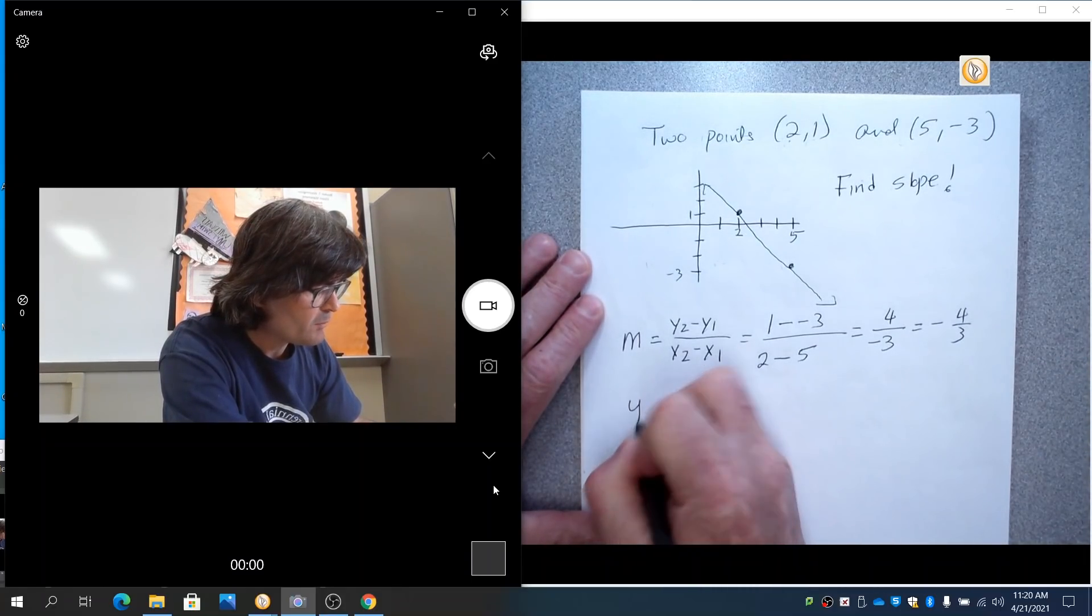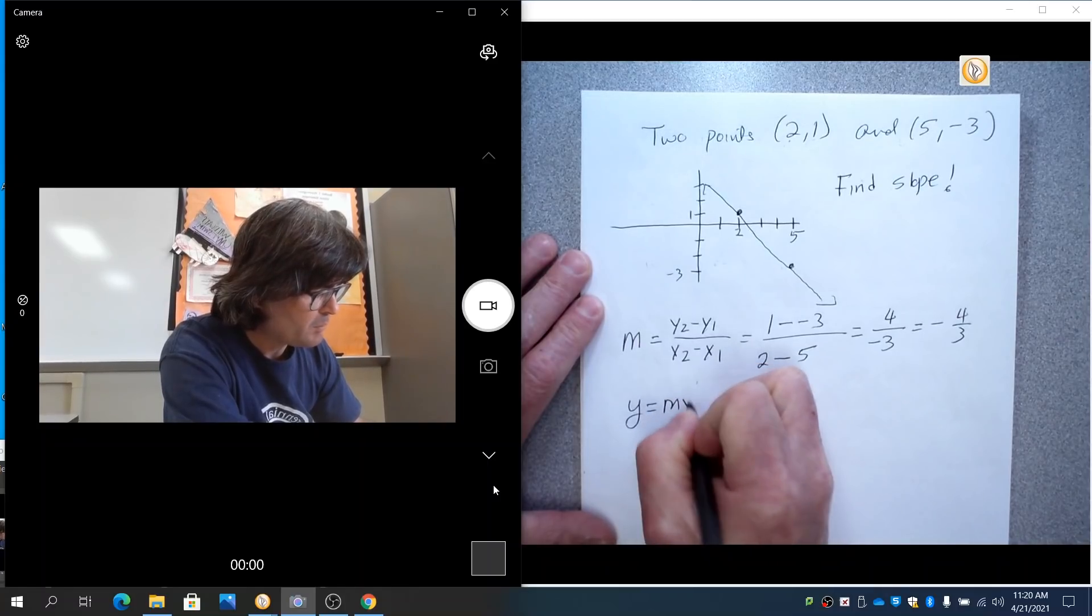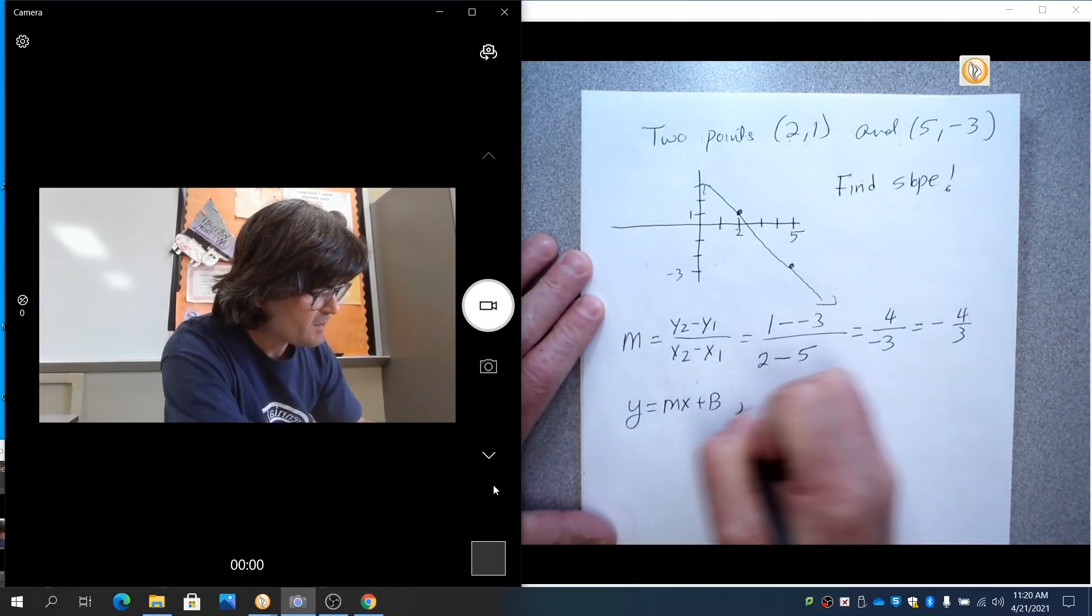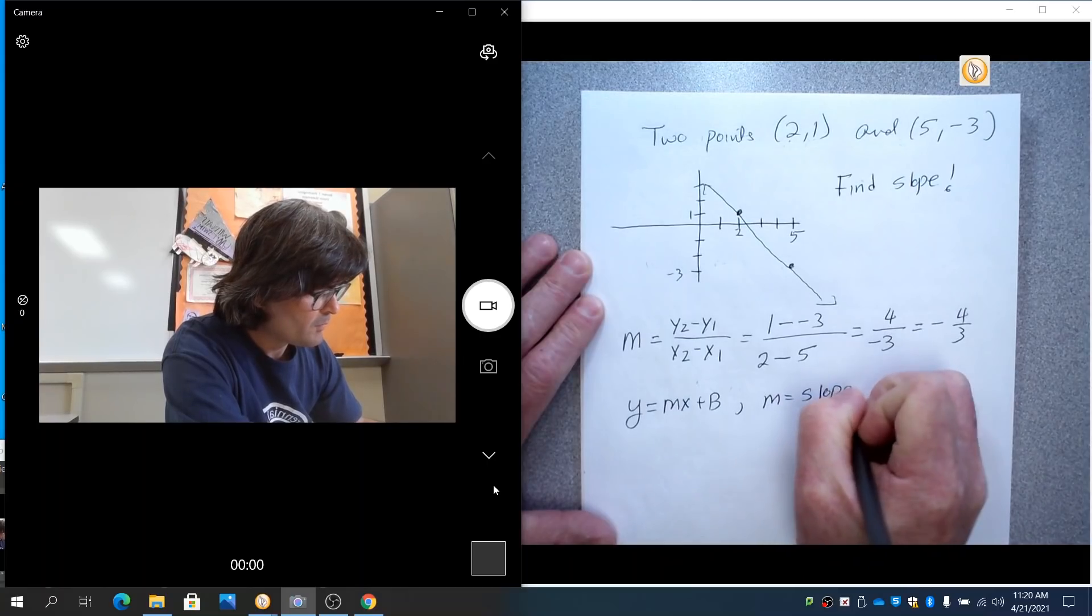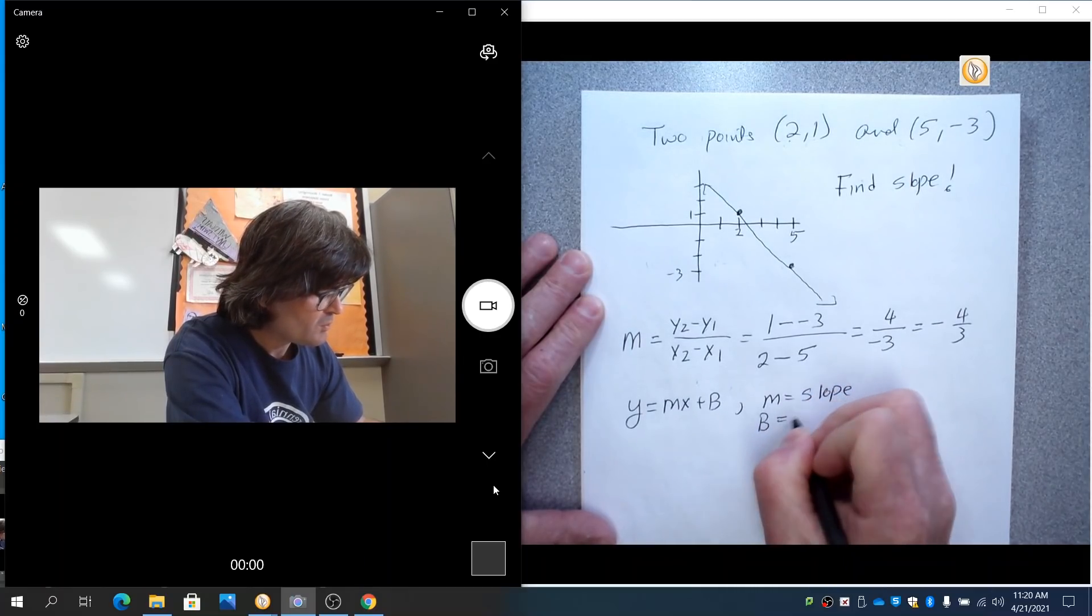And for a linear equation, we have Y equals MX plus B, where M is the slope, and B is the Y-intercept.